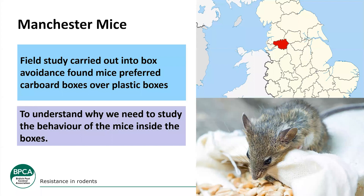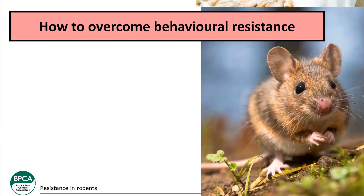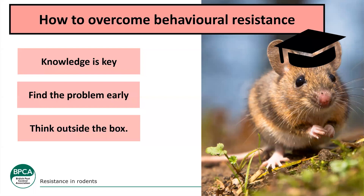Both studies are fascinating and worth taking into account. Though done in specific areas, if you're having similar issues on your sites, it may be worth trying slightly different sized boxes or different bait formulations. As we've seen with physiological resistance, this kind of behavioral pattern is likely being exhibited elsewhere too. When dealing with behavioral resistance, recognizing the signs early gives you the best chance for successful treatment. Modern technology like trail cams can be very effective — you can see rodents actively avoiding traps or boxes.